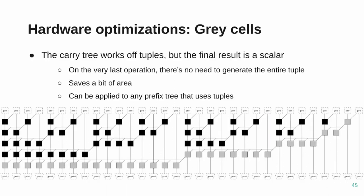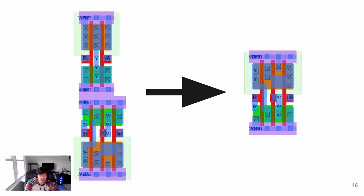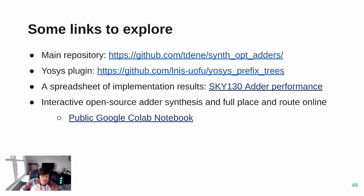There are some other hardware optimizations I'll breeze through. There's the concept of gray cells: for a big tree evaluating a sum, you realize the bottom row doesn't need as much logic. Basically, you trim off some logic because your final result doesn't need to generate a full tuple — just a single result — saving some area. Now I want to get to the demos.